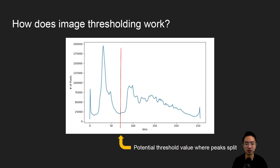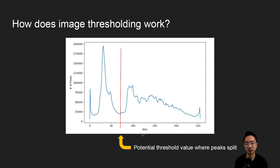Typically you need to choose a threshold value, and there are a lot of different ways to do that. One of the more useful approaches is to plot a histogram. Based on the histogram, you could decide how you want certain groups of pixels or peaks to be split. In the example we'll be talking about today, we'll choose somewhere right where it dips, so that the two peaks are kind of exactly separated somewhere in the middle.